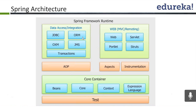OXM stands for Object to XML Mapping. It has two phases: marshaling and unmarshaling. Marshaling means converting an XML document to an object representation, and unmarshaling means converting an object representation to XML.